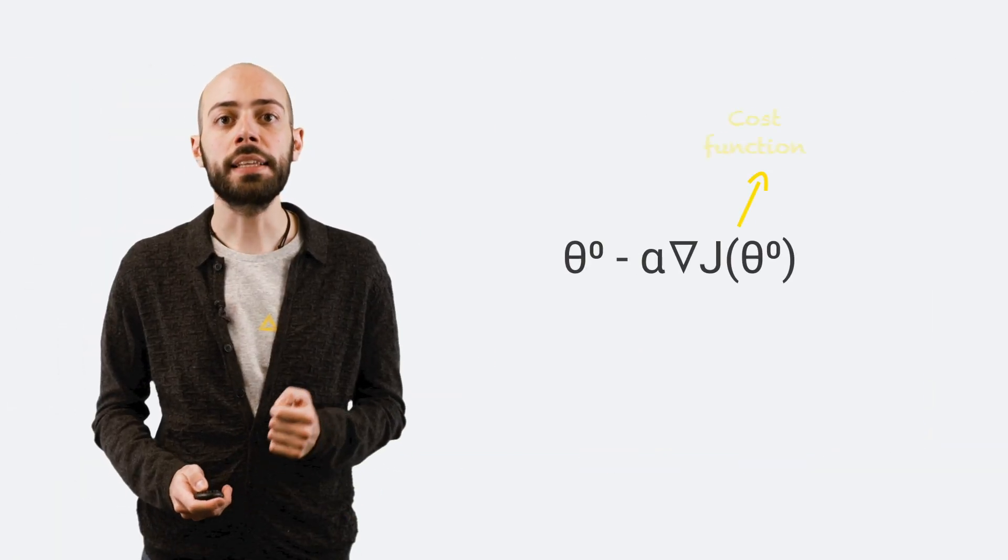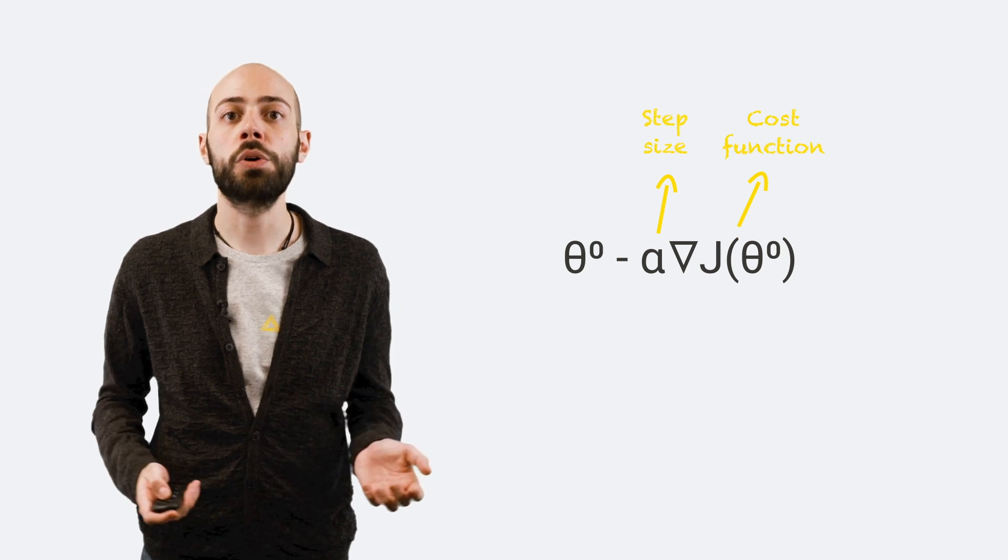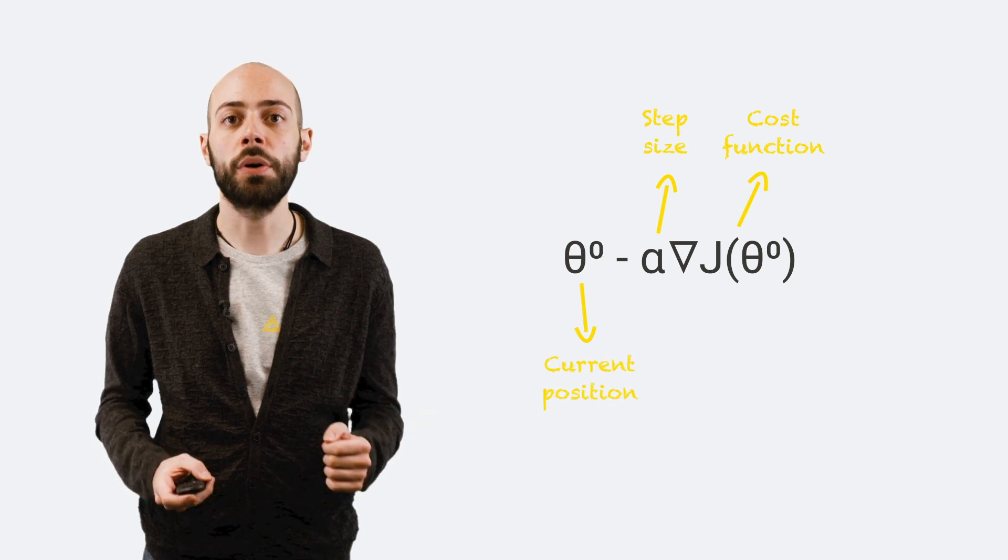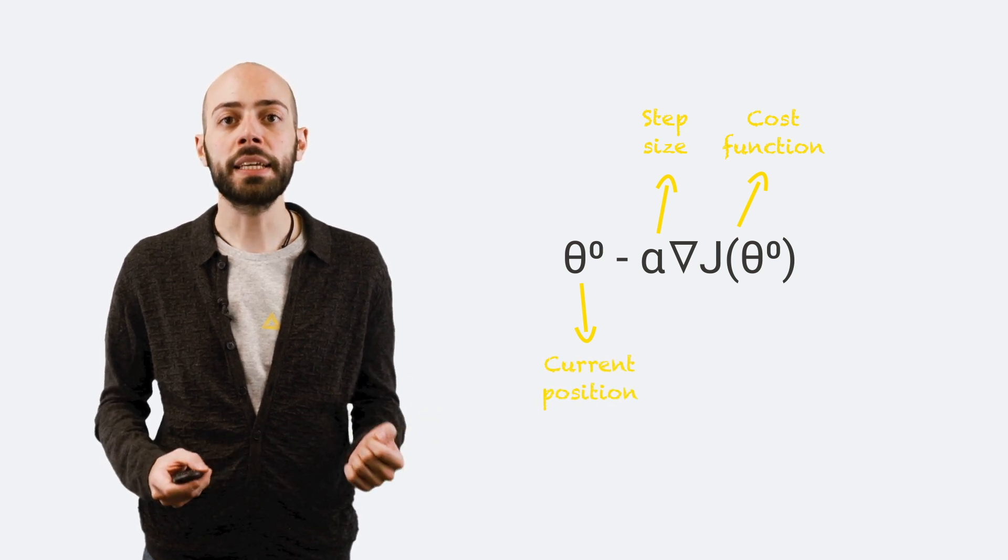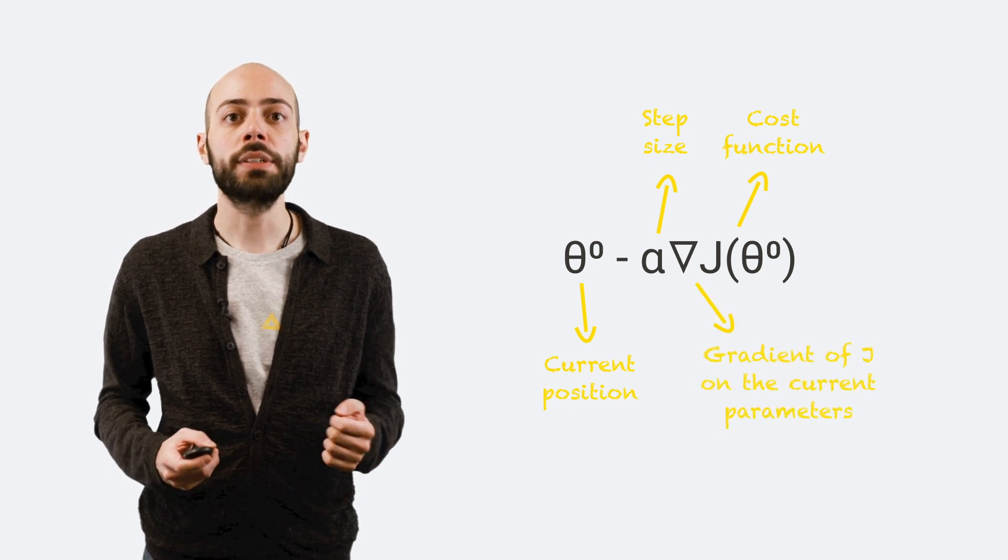Formally, if J is the cost function, alpha is the step size, also known as learning rate, and theta 0 is the current configuration of the model parameters, the gradient descent algorithm calculates the gradient of J on the current parameters.